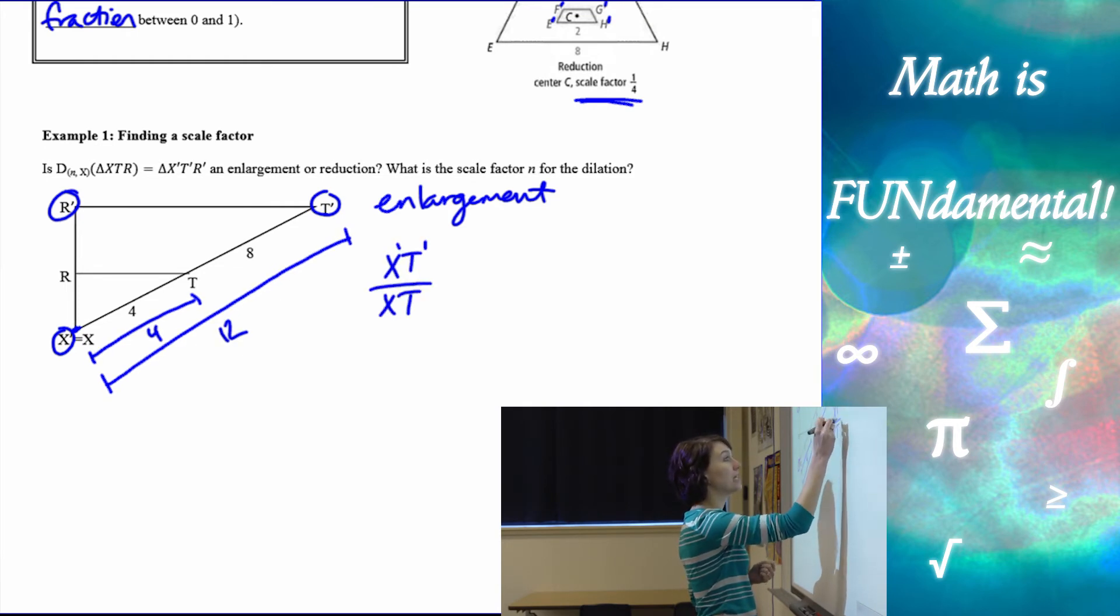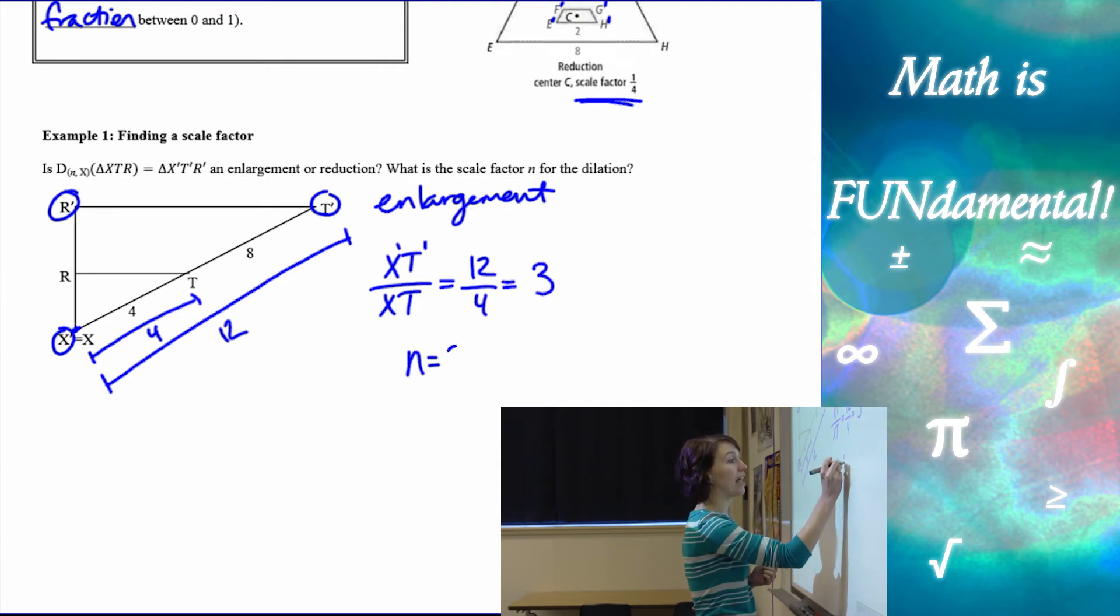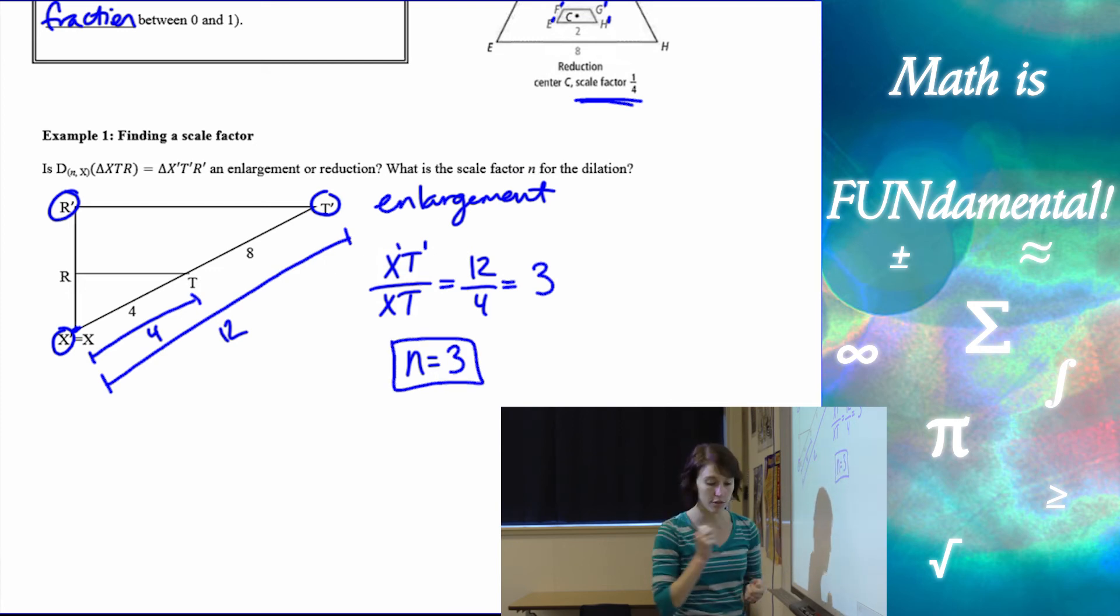So X, T prime, X prime, T prime over X, T is going to be 12 over 4, which is 3. So my scale factor N is going to be 3 in this case, not 2.